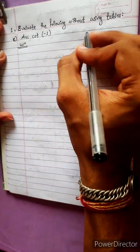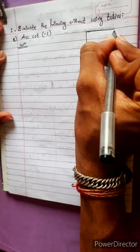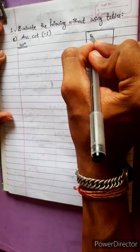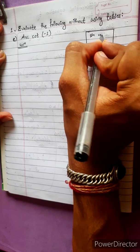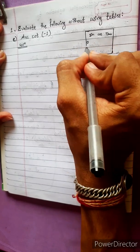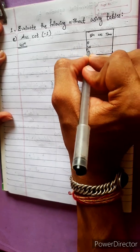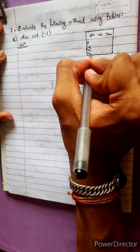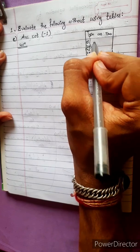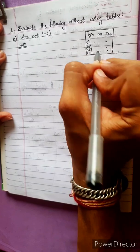Evaluate the following without using a table. The table has sin, cos, tan for 0°, 30°, 45°, 60°, 90°. We will learn how to do this without using the table.